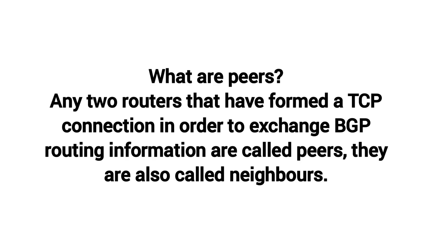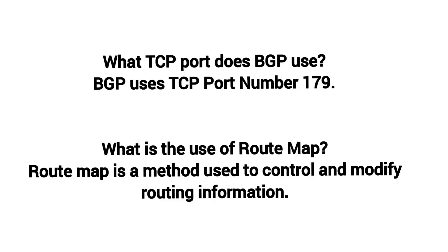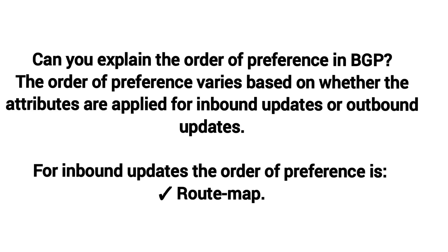What are peers? Any two routers that have formed a TCP connection in order to exchange BGP routing information are called peers. They are also called neighbors. What TCP port does BGP use? BGP uses TCP port number 179. What is a route map? A route map is a method used to control and modify routing information.